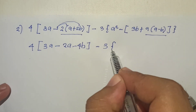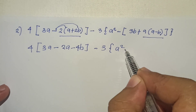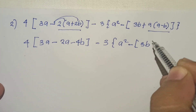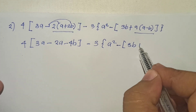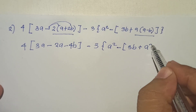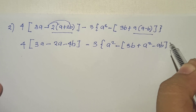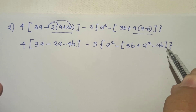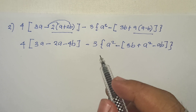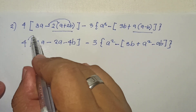Next, we have 3a squared minus — we have to first simplify the term so we don't get confused. So we have a squared minus ab. Next, we need to distribute.